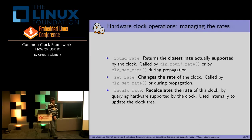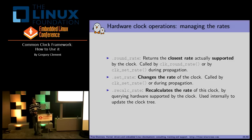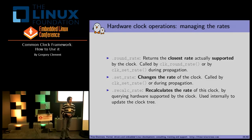The other set of operations is about managing the rate. round_rate returns the closest rate that your clock can actually support — it's called directly by the API clk_round_rate, or it's used when you do a clk_set_rate during propagation of your new rate. This function is called by the core of the common clock framework. Then set_rate actually changes the rate — it's called when you do clk_set_rate or when there is a rate propagation in the clock tree. Finally, recalc_rate is never directly called by a device driver but is used internally when the core wants to update the clock tree.